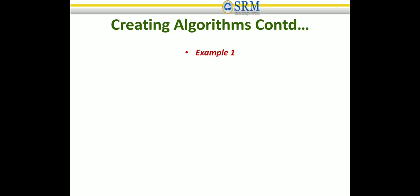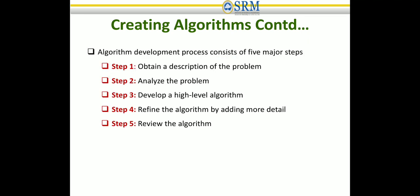These are the steps in the algorithm development process. Step 1: obtain a description of the problem — observe and understand the problem. Step 2: analyze the problem — find the exact issue and what you need to address.